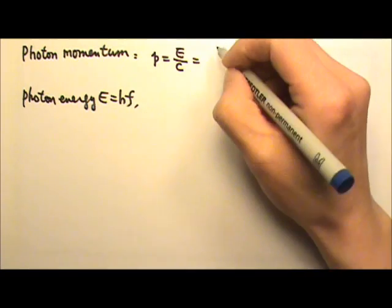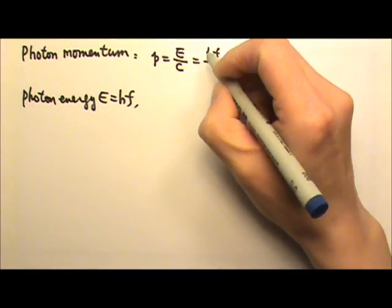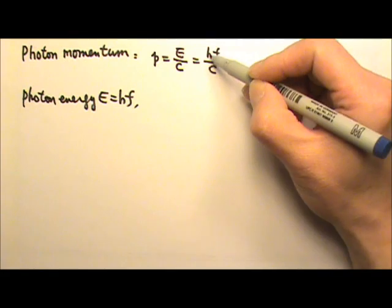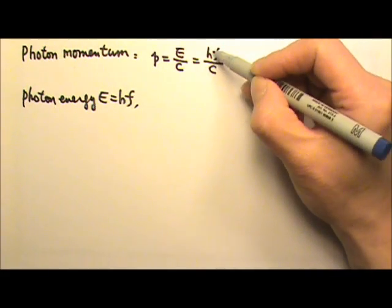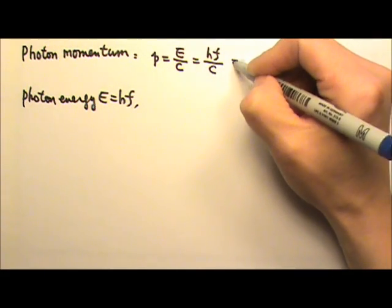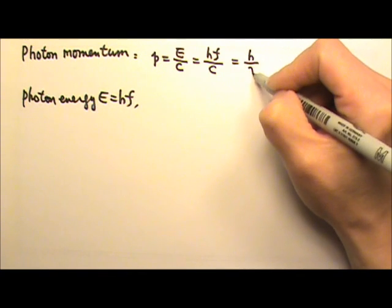And because E is HF, this will be HF divided by C. And because we know C divided by F is the wavelength, that means this equals H divided by the wavelength.